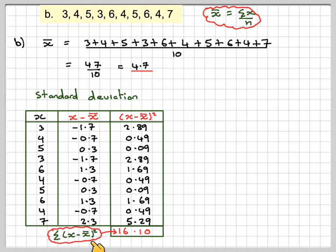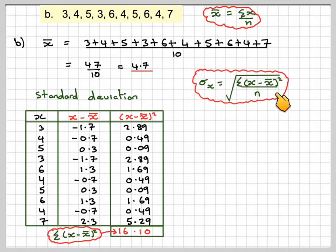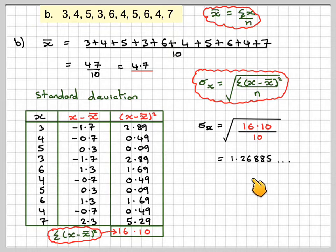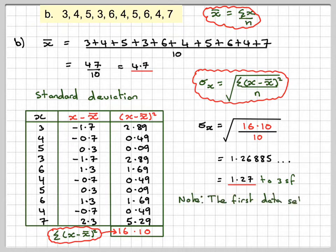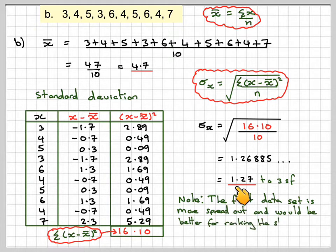Squaring each of those individually and then adding them up gives us the sum of (x − x̄)². Using the formula — square root of σ(x − x̄)² / n — that's √(16.10 / 10) = 1.26885, which gives 1.27 to 3 significant figures. We know the first data set is more spread out because its standard deviation of 2.58 is higher than 1.27. Therefore, the first set of data would be better for ranking students compared with this set. There's got to be a reason for calculating the statistic.